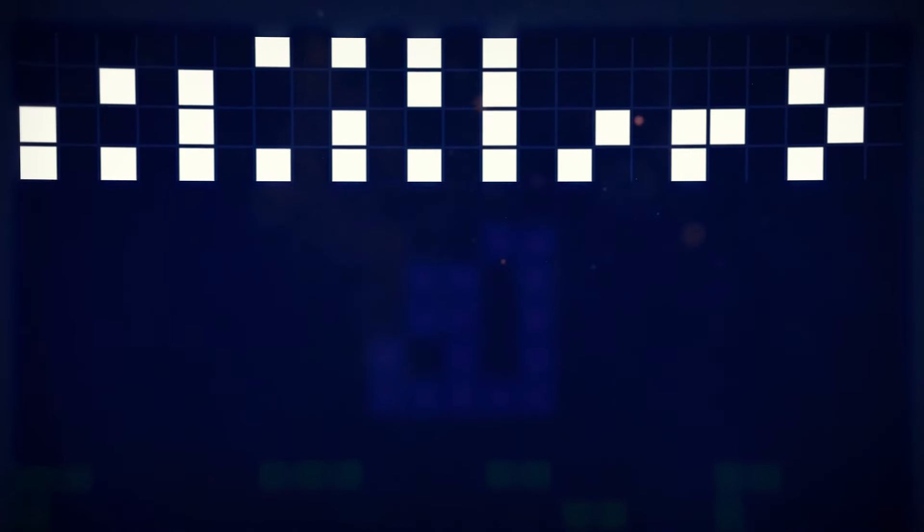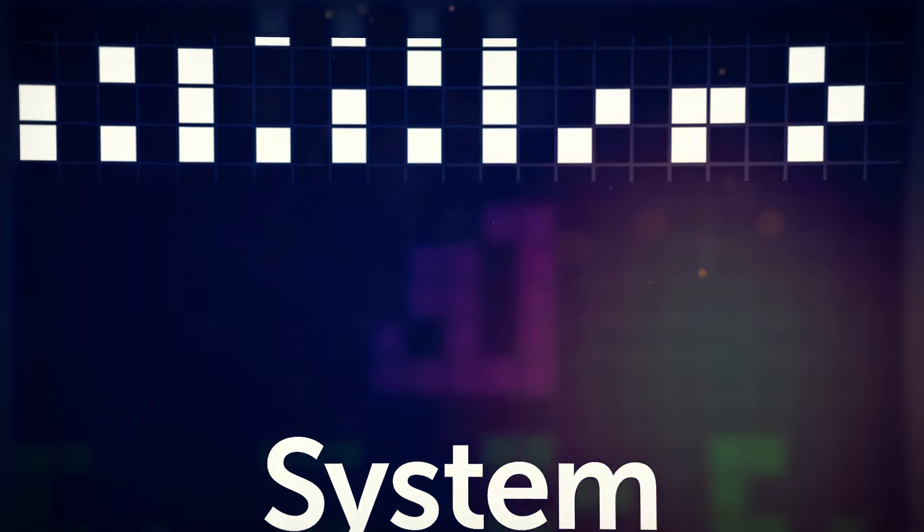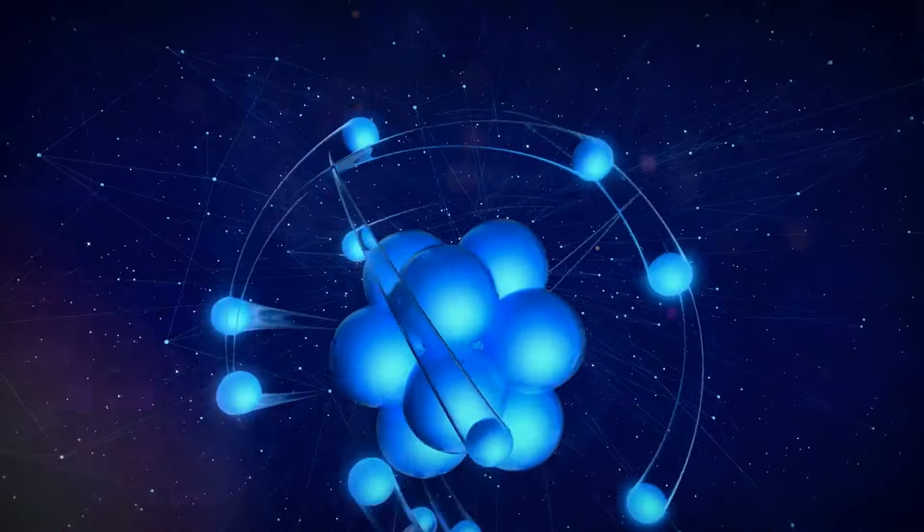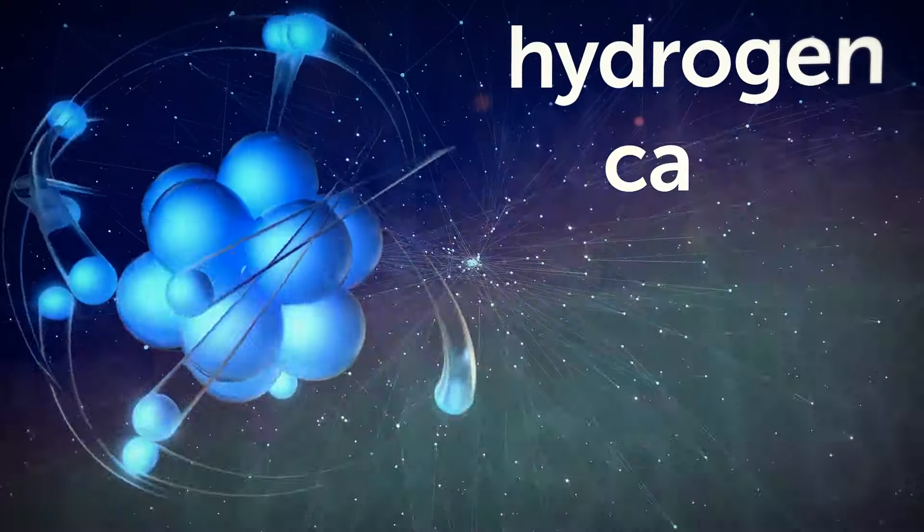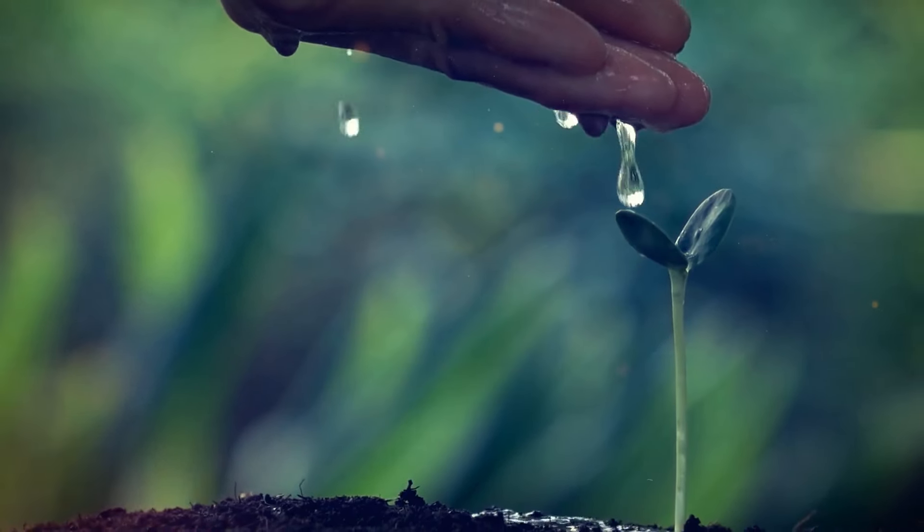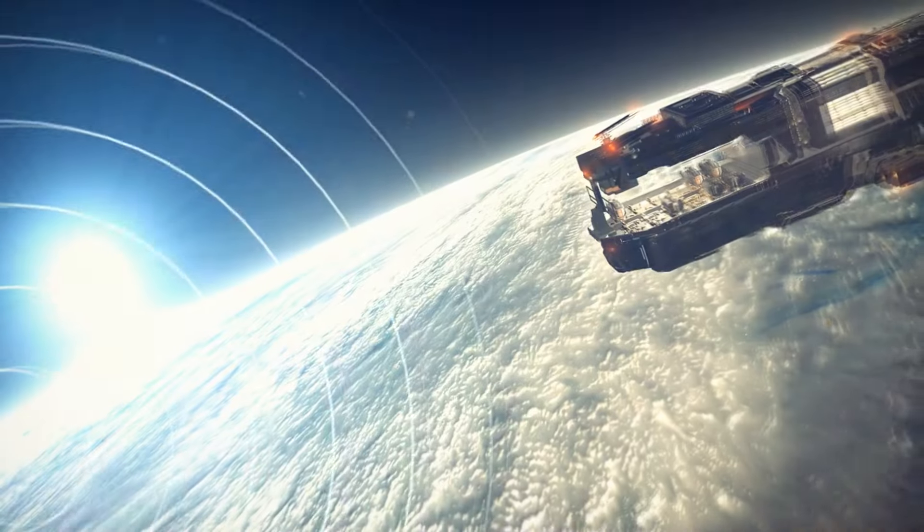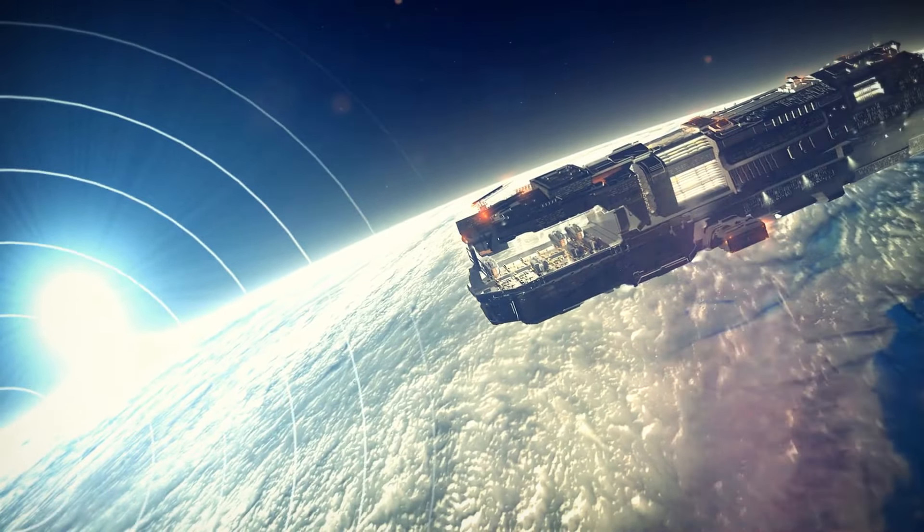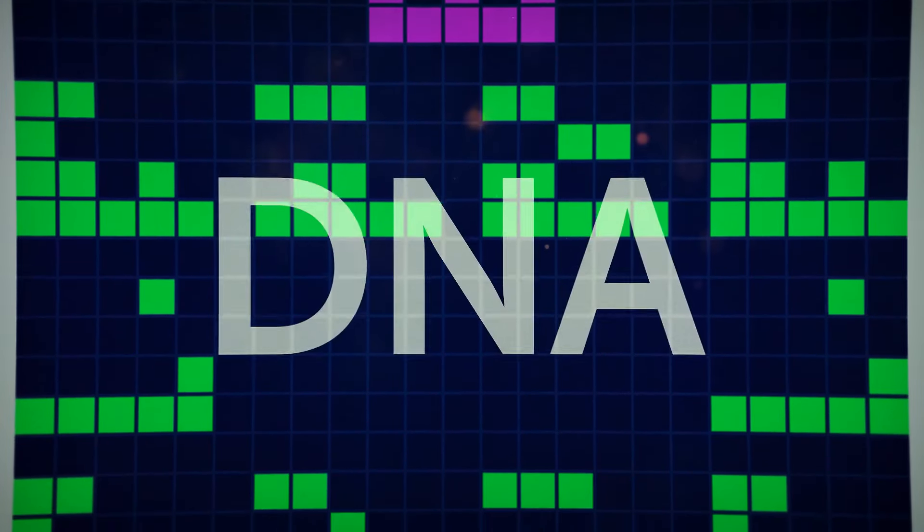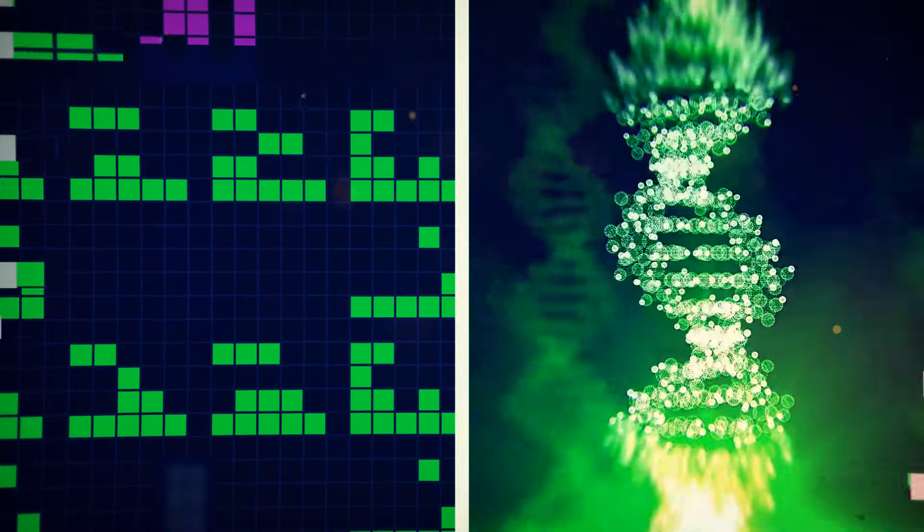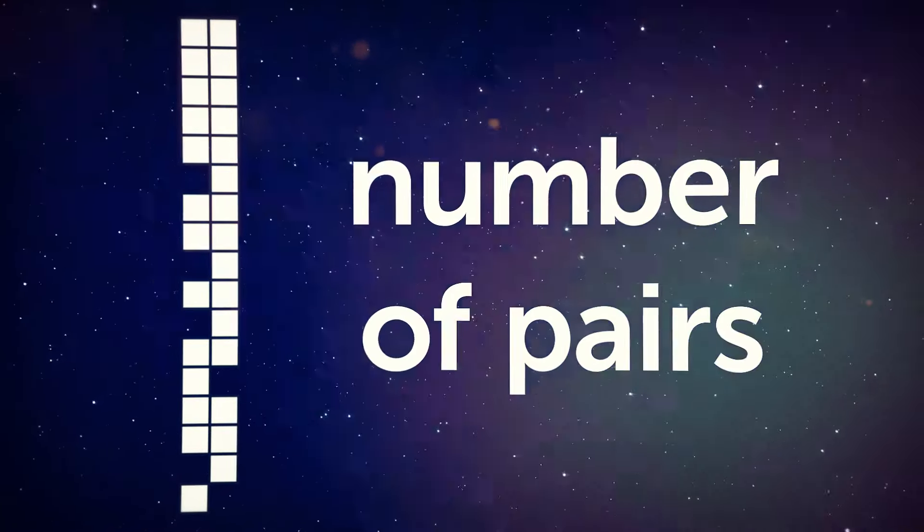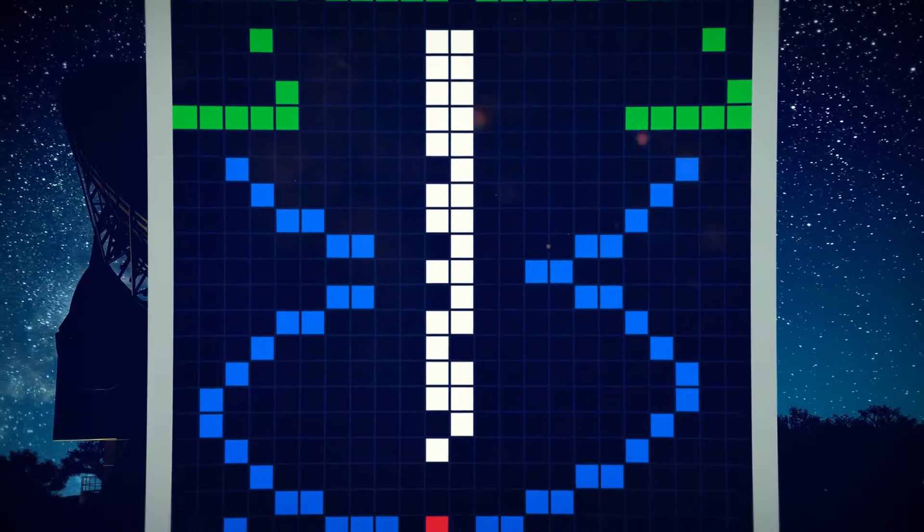It's a rectangle of 23 by 73 squares that has information about our civilization encoded using a binary code. At the top of the rectangle, there's a system of numbers that we use. This purple thing is the key to read the next part of the message. The atomic numbers of the elements like hydrogen, carbon, nitrogen, oxygen, and phosphorus are encoded in this key. These are the key elements that can start life.